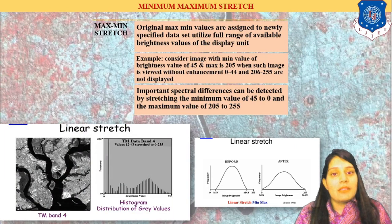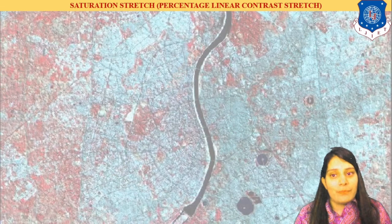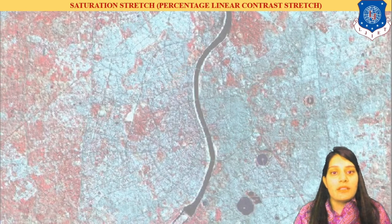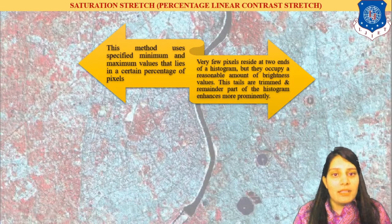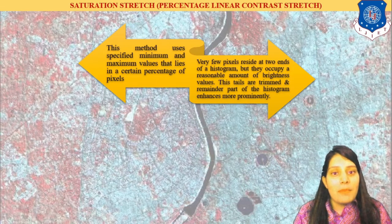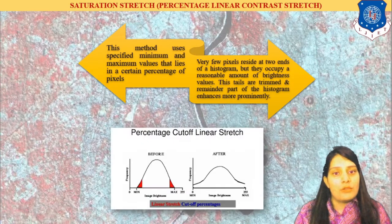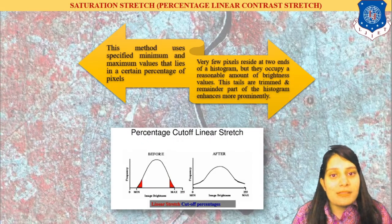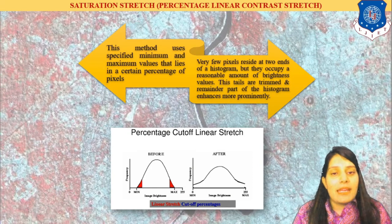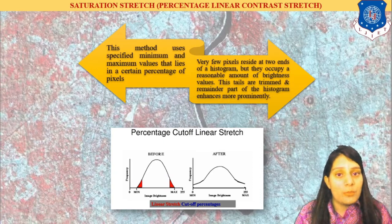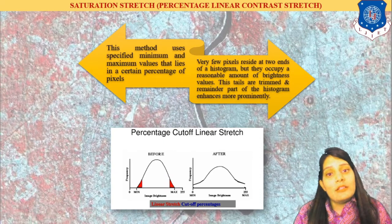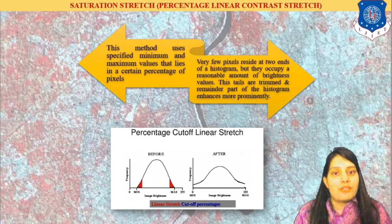In the minimum-maximum stretch, the full range from 0 to 255 is provided. Now for saturation stretch, also known as percentage linear contrast stretch, a certain percentage of pixels are trimmed from the tails. The orange part shown in the histogram represents the tails that are trimmed, and the remainder is equally distributed across the grayscale values from 0 to 255. This is known as saturation stretch.